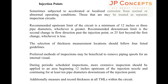The first item is injection points. It should be considered as a separate inspection circuit. It is subjected to accelerated or localized corrosion from normal to abnormal operating conditions. Inspection must be conducted for a minimum of 12 inches or 3 pipe diameters, whichever is greater, for the upstream limit. The downstream limit is the second change in flow direction past the injection point, or 25 feet beyond the first change, whichever is less. The preferred method of inspection may be to remove piping spools for an internal visual. Measure and record thickness at all CMLs within the circuit.